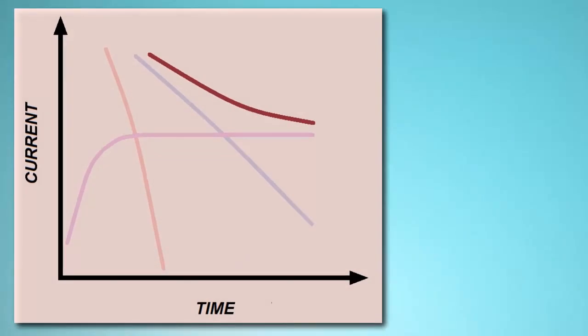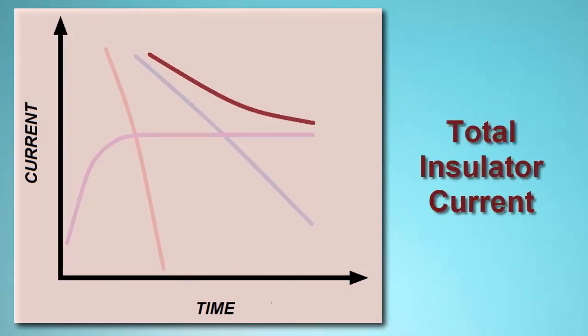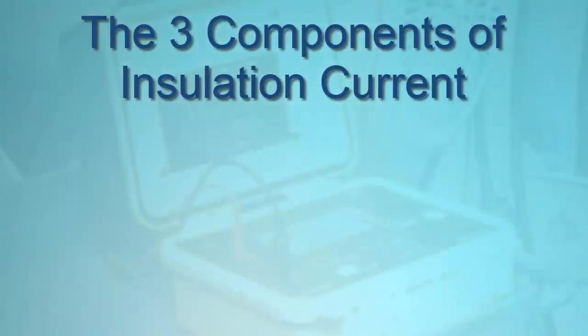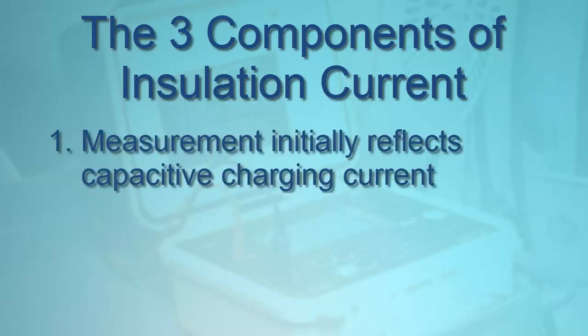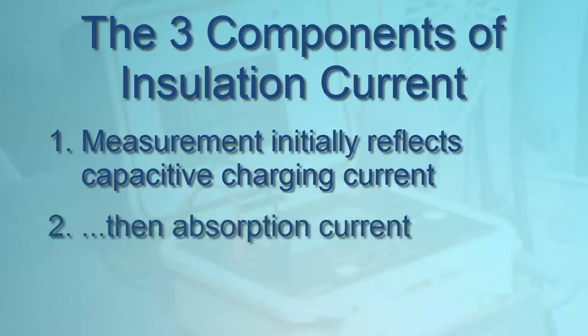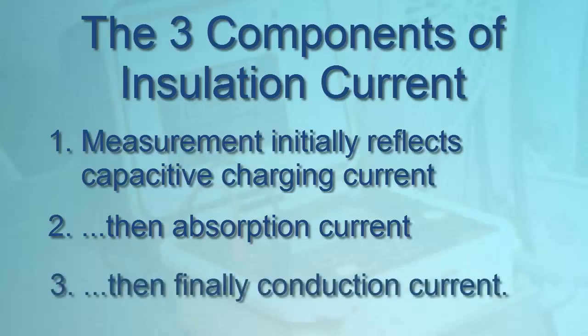Combining these three components produces a total insulation current profile similar to the illustration shown on the screen. To summarize, for a typical test, the initial measurement primarily reflects capacitive charging current. After a period of time, absorption current is dominant. Beyond 1 to 10 minutes, the measurement is mainly composed of conduction current, the primary value used to calculate the quality of insulation resistance. Understanding how these individual currents contribute to the total insulator current can help you correctly interpret the results you receive when performing a test.